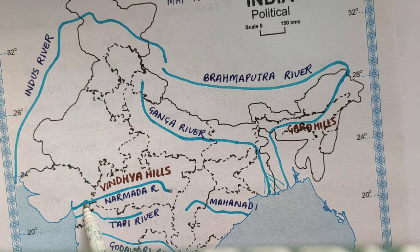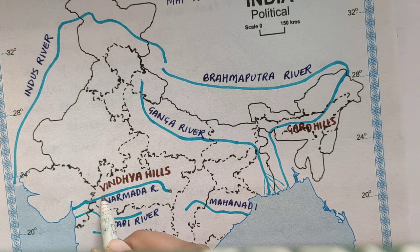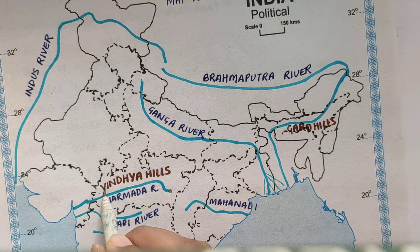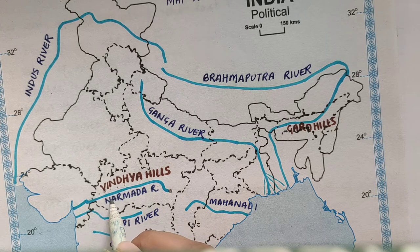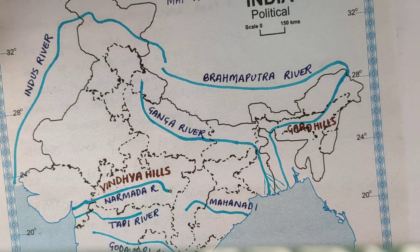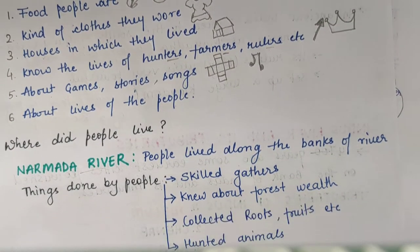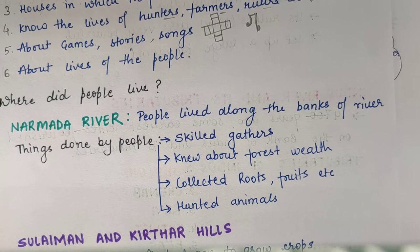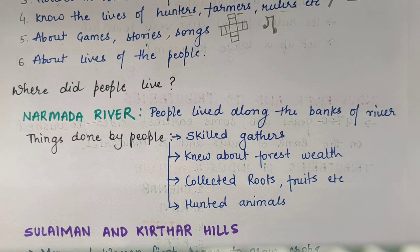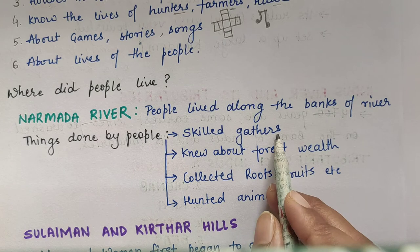Near this Narmada river, many civilizations occurred. All people were living on the bank of this river — rivers ke aas paas rahte the. Now, how were they living? The people who were living near the Narmada river were skilled gatherers.